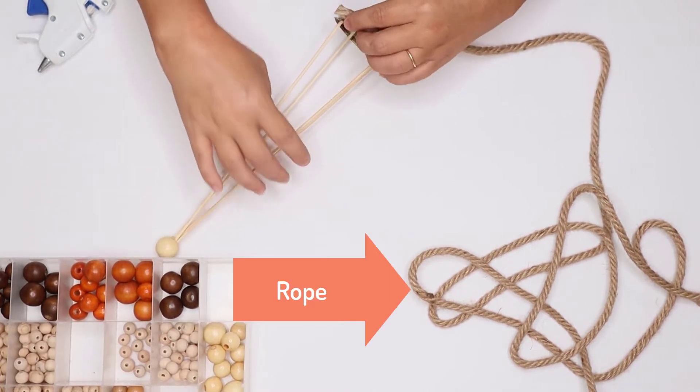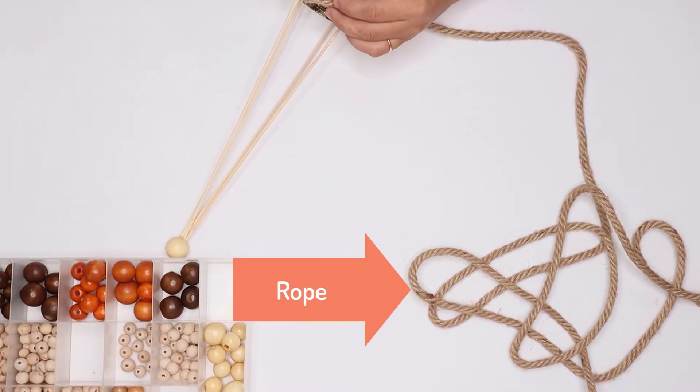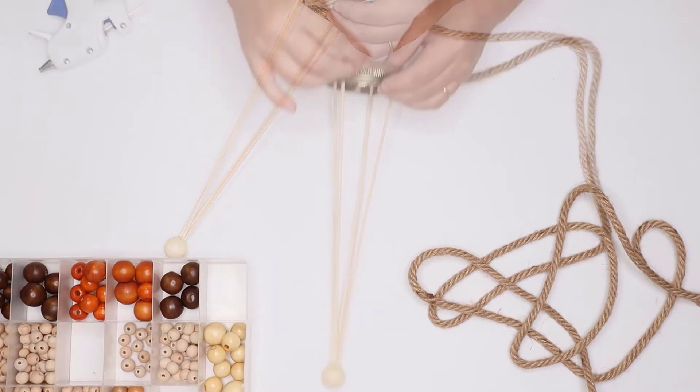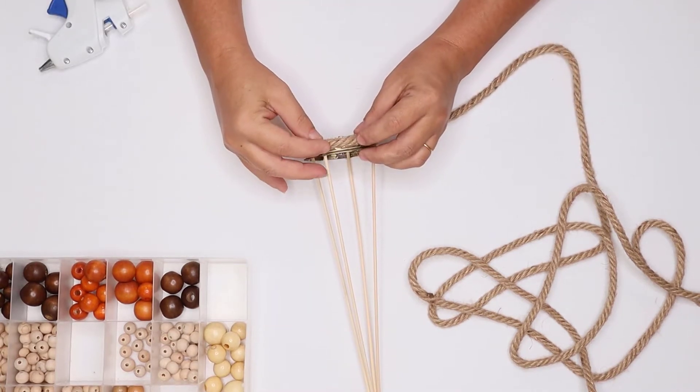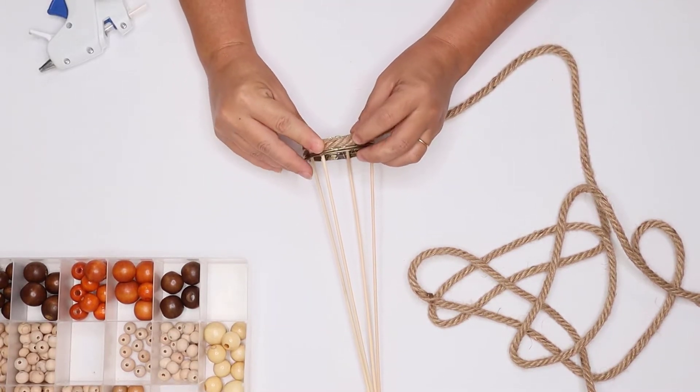You will also need some rope. I got this from Dollar Tree. I started by gluing the rope to the bottom around the lid.